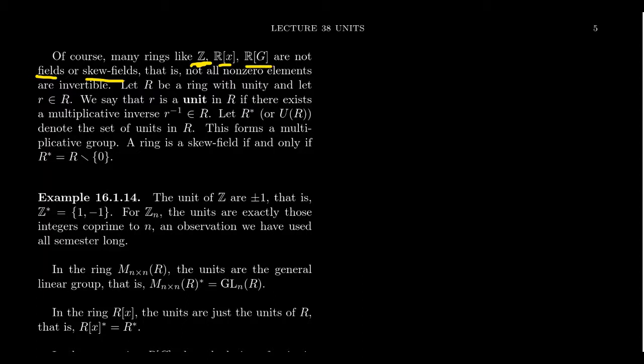Group rings also have that characteristic that even if the coefficients are a field, group elements themselves are individually invertible, but when you make a ring out of it, you create lots of elements which are not invertible. The same thing can be said for matrix rings. So when we study rings, we're very interested in when an element is invertible or not, and we're interested enough that we give it a name.